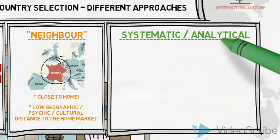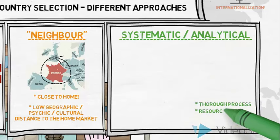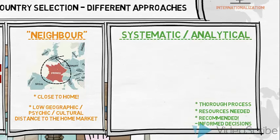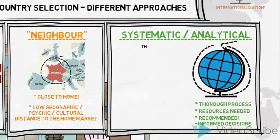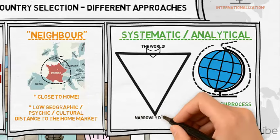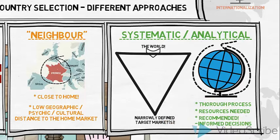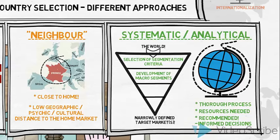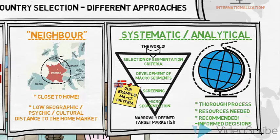The systematic or analytical approach implies a more complex and thorough process, and resources are needed to allow for the collection of required secondary and primary data. Marketers most often recommend this approach as the one that provides the most informed decisions of which countries and markets to target. In theory, the screening of markets begins with the world market as an option and ends with a narrowly defined target market within one or several selected countries. The process includes several steps: starting with macro-segmentation criteria and the development of macro-segments, followed by thorough screening of selected segments or countries, and finally developing and choosing between micro-segments in one or more selected countries.